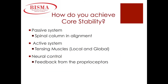How do we achieve core stability? The passive system is to adopt a neutral spine, correcting our spinal column alignment. The active system is tensing our local and global muscles — all of our core muscles: our rectus abdominis, interior and external obliques, transverse abdominis, erector spinae, and so forth. Neural control is engaged when our proprioceptive nerves are feeding back to our central nervous system to make corrections in posture.